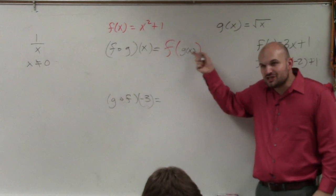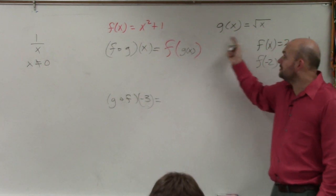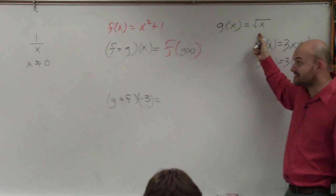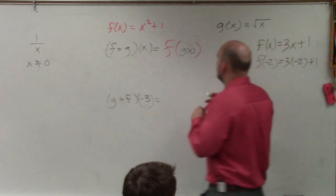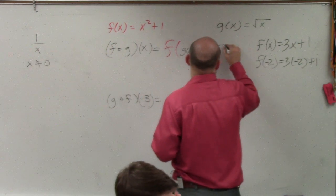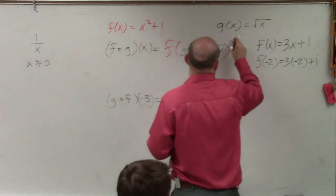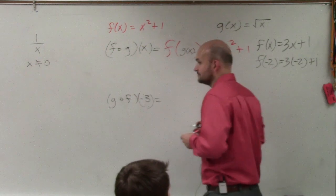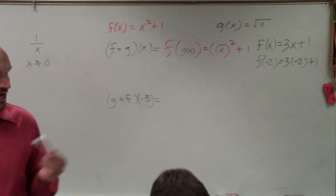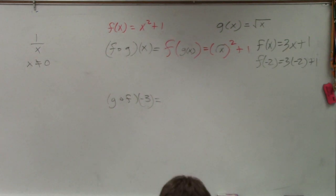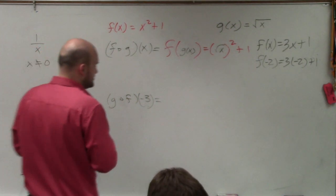So what does g(x) equal? Well, g(x) is square root of x. What does f(x) equal? x squared plus 1. So it's going to look like square root of x over x squared plus 1. So you guys see how the red represents f(x), and the black represents g(x)?